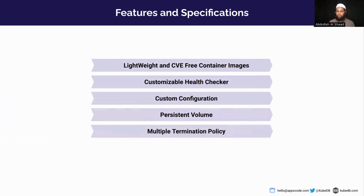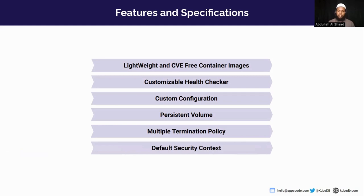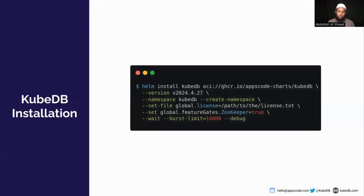We have four termination policies: DoNotTerminate, Halt, Delete, and WipeOut. With DoNotTerminate, accidental deletion is prevented — the KubeDB operator won't allow deletion. With Halt, secrets are retained when you delete the database but other instances are deleted. With Delete, the secret and PVC are kept while other instances are deleted. With WipeOut, all instances created by the KubeDB operator are deleted. We also configure a default security context so that no container image runs as root.